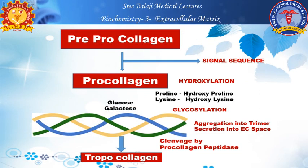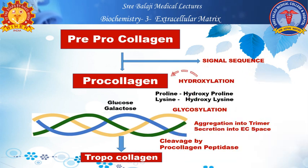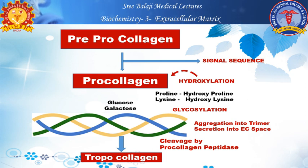Starting from pre-procollagen, which is a precursor, signal sequences are removed to form procollagen. Once procollagen is formed, it is subjected to hydroxylation — hydroxylation of proline forming hydroxyproline, and lysine forming hydroxylysine. This hydroxylation is an example of post-translational modification and requires vitamin C as a co-enzyme. After hydroxylation, the next step is glycosylation — the addition of carbohydrates, specifically glucose and galactose.